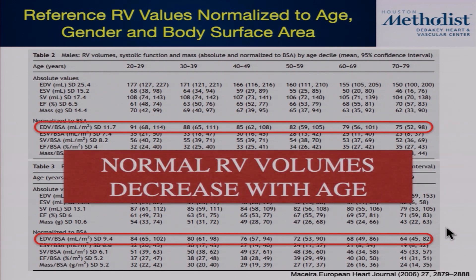One pitfall to avoid: before calling an RV dilated, you really need to index it both to patient size and age. You don't want to call young, healthy, normal people with RV dilatation simply because they're young and their RV is physiologically bigger.